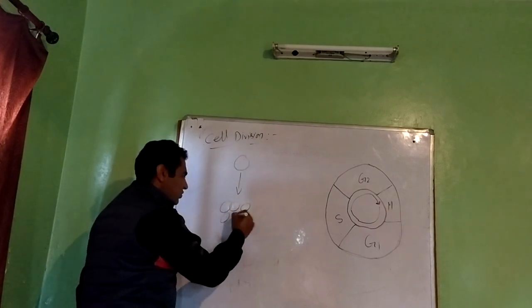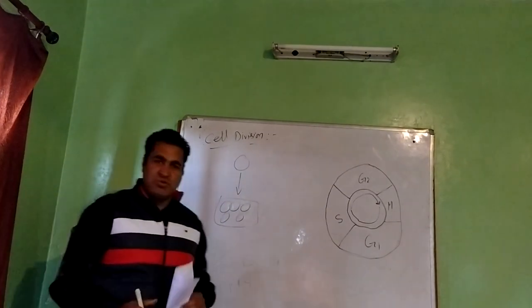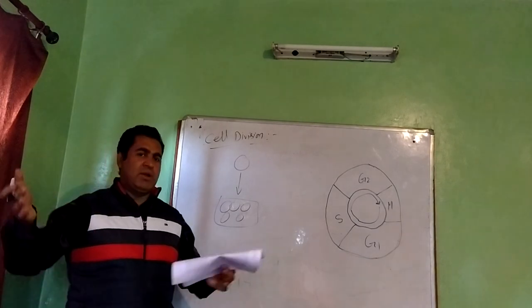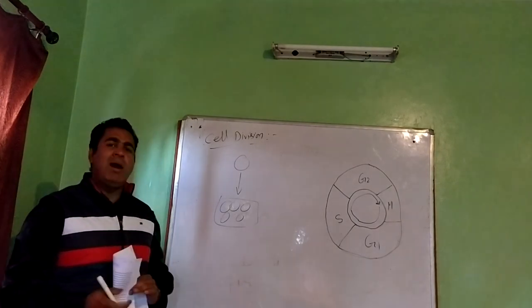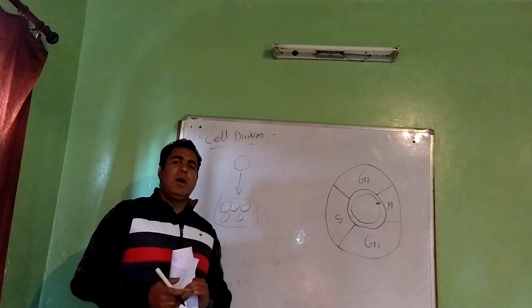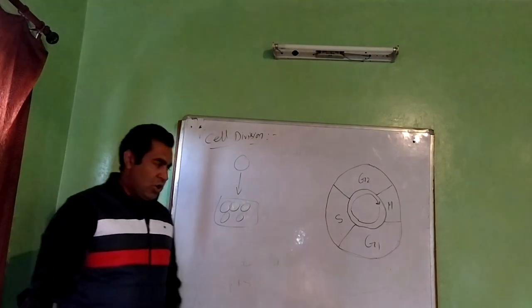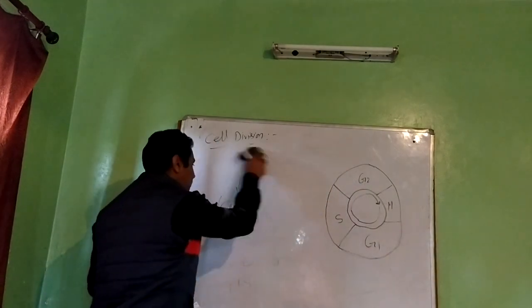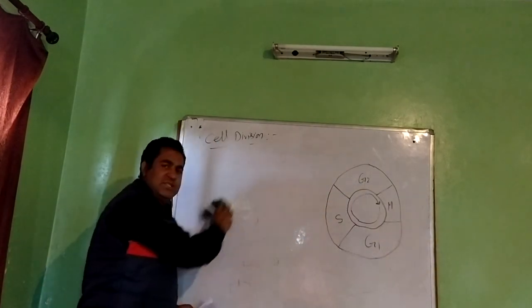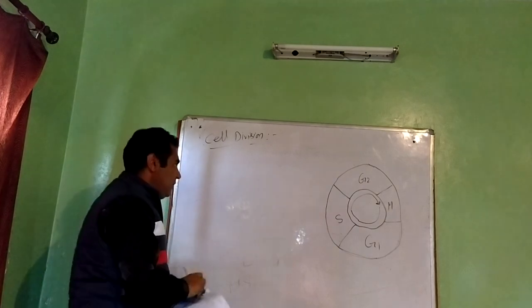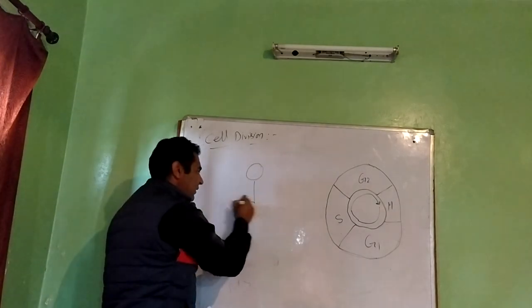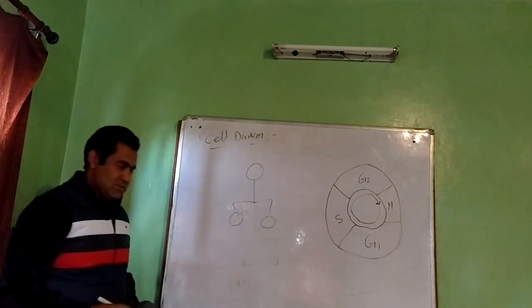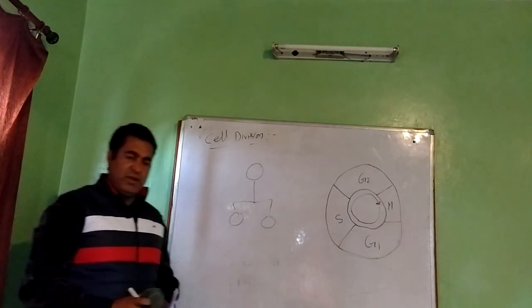That cell is called the zygote. This zygote gives rise to different types and numbers of cells, and all these cells perform their particular functions. According to the third tenet of cell theory, we should have a pre-existing cell.